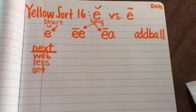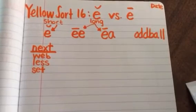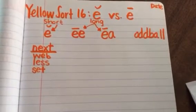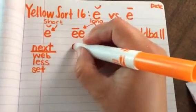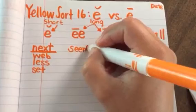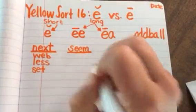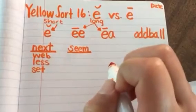Moving on, we have the long E sound spelled as E-E next to each other, and there are eight words in this category. Let's start with our anchor word: S-E-E-M, seem. Remember when those two E's are next to each other it says the long E sound, E, seem.